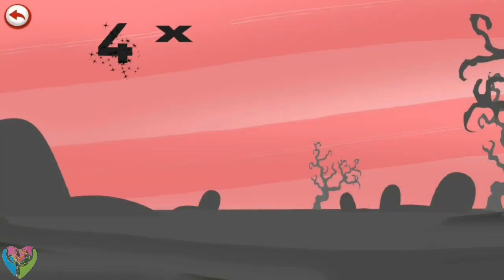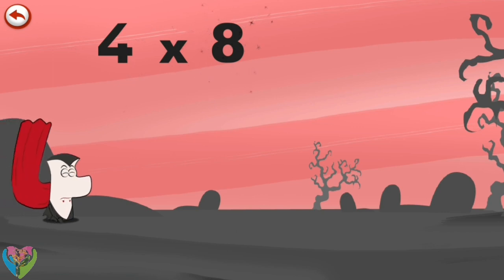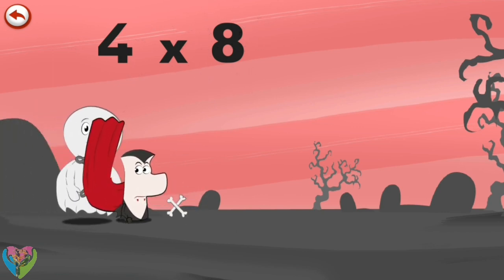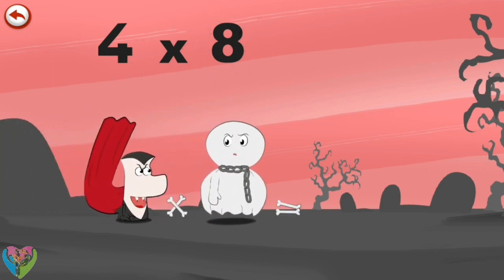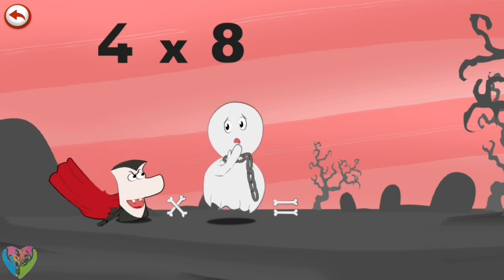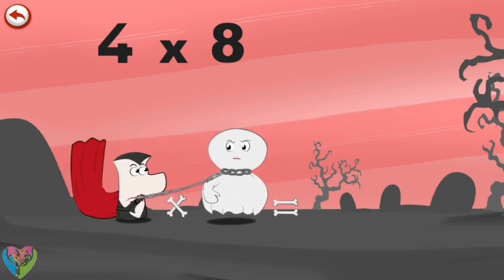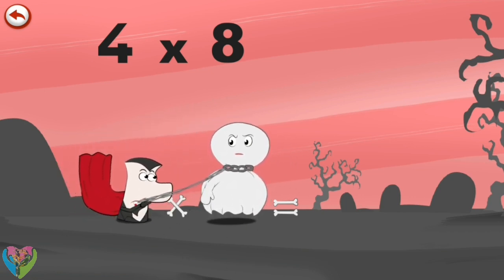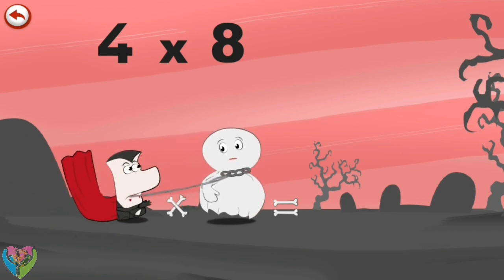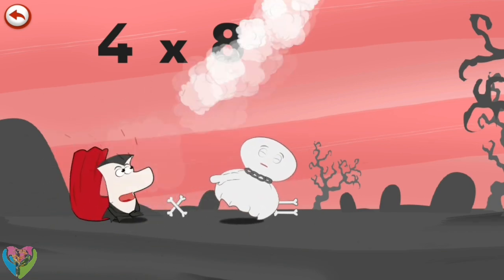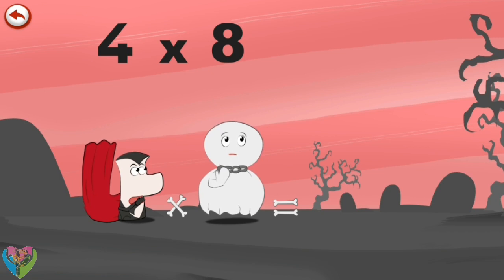What's the story of 4 times 8? When Vamp 4 sees a chain of Spooky 8 the ghost, he can't help trying to bite it. Spooky 8 won't stand for that and tugs hard on his chain. Vamp 4 resists and pulls as hard as he can, until suddenly the chain breaks.